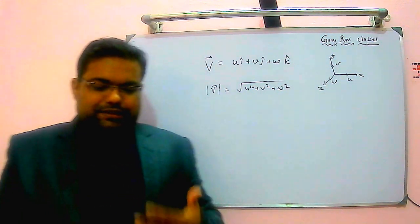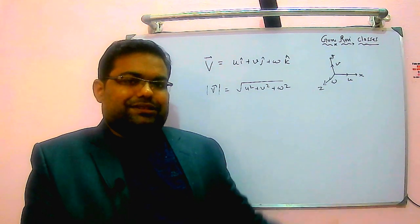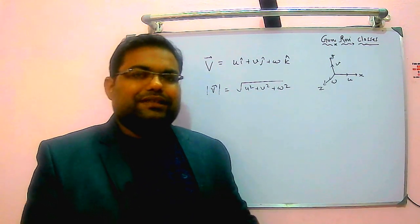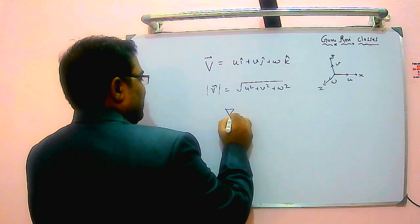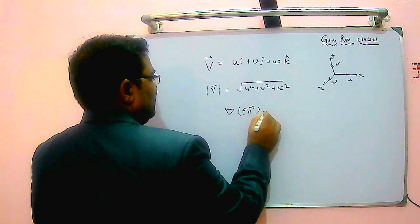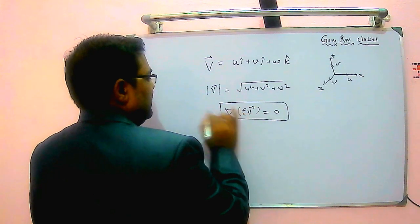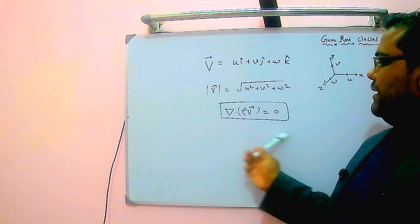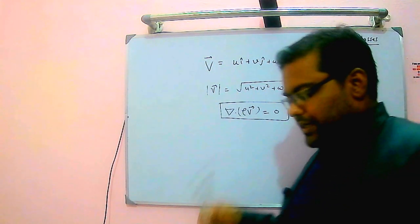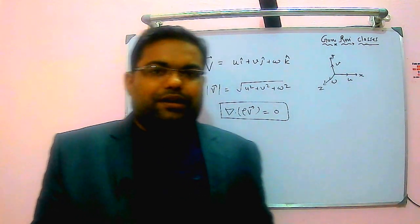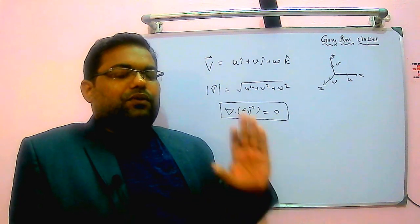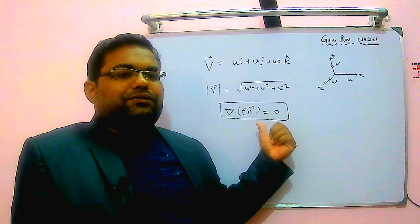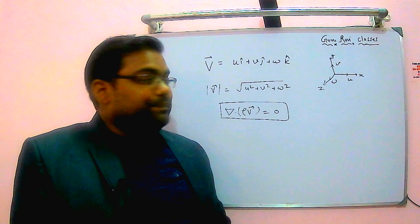It has already been covered in previous lectures that any flow, if we say it is a possible case of fluid flow, must satisfy the continuity equation. The continuity equation in generic form is: divergence of (density × velocity vector) should be zero. If we get zero, it is satisfying continuity. This is a mandatory condition in order to say a certain flow is possible.